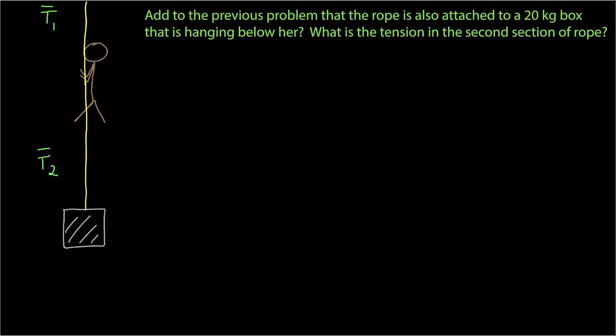Note that the tension in the two sections of rope are different. The tension is everywhere the same in our tension model only between two points of contact between objects with mass. So there's the tension above between the winch and Alice, and the tension below between Alice and the box, and they will have different magnitudes.